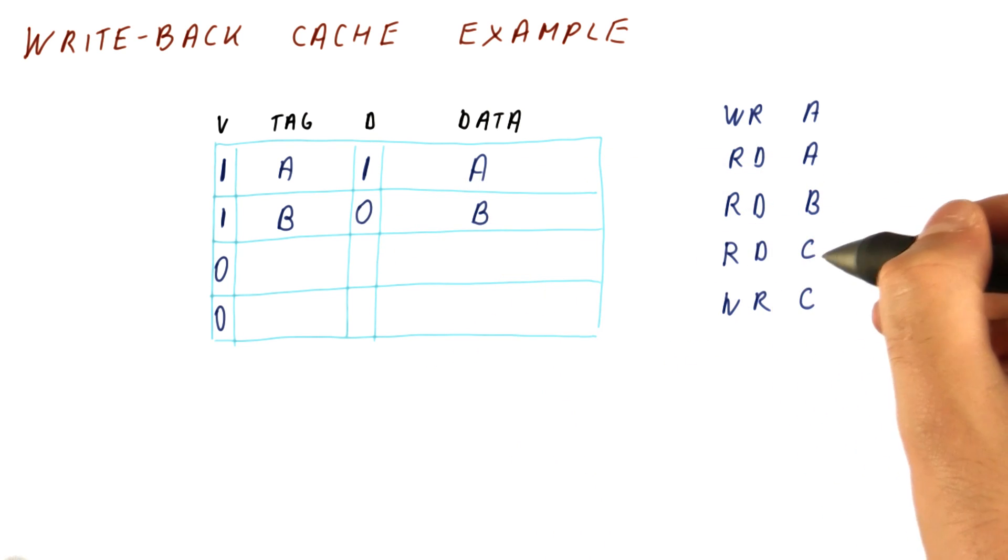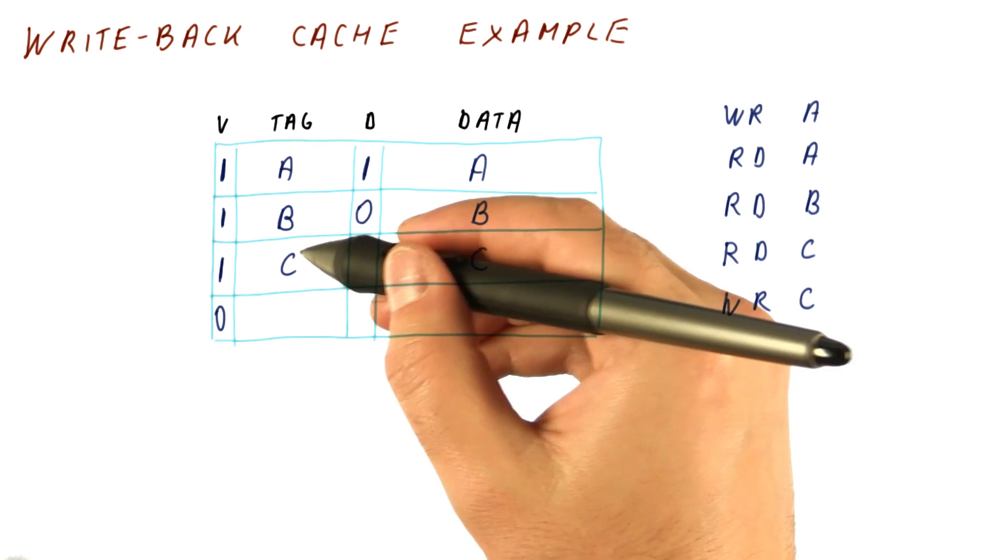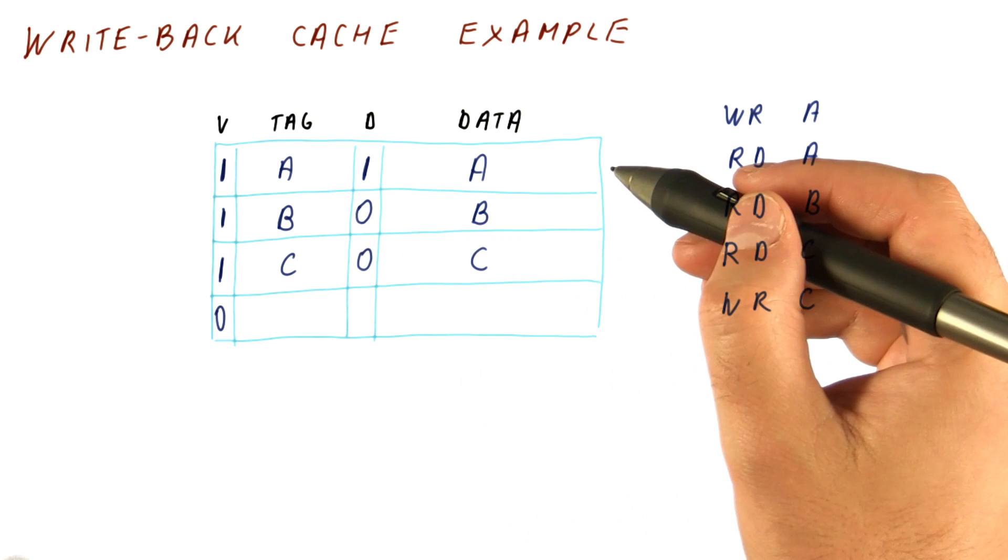Next, let's say we read C. It's a miss, bring C in, change the tag and the valid bit. It's a read, so the dirty bit starts out at 0.